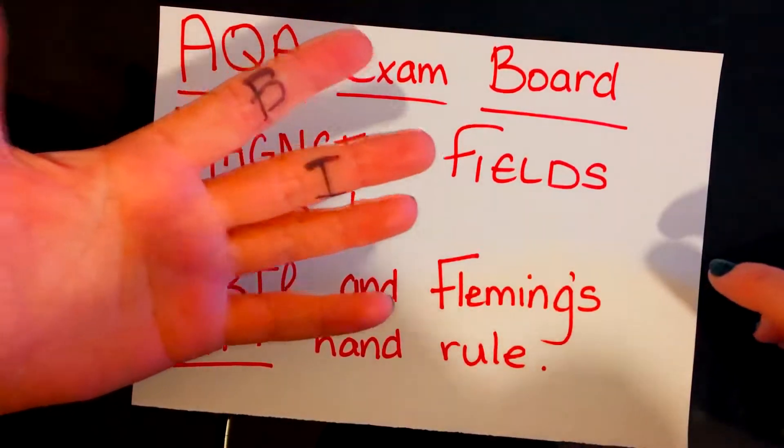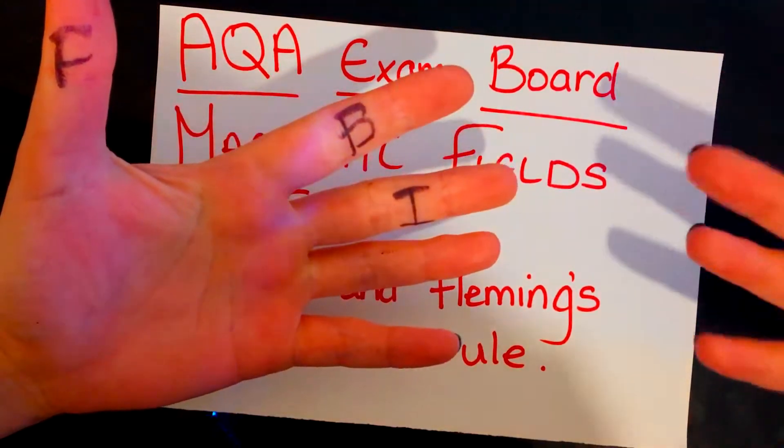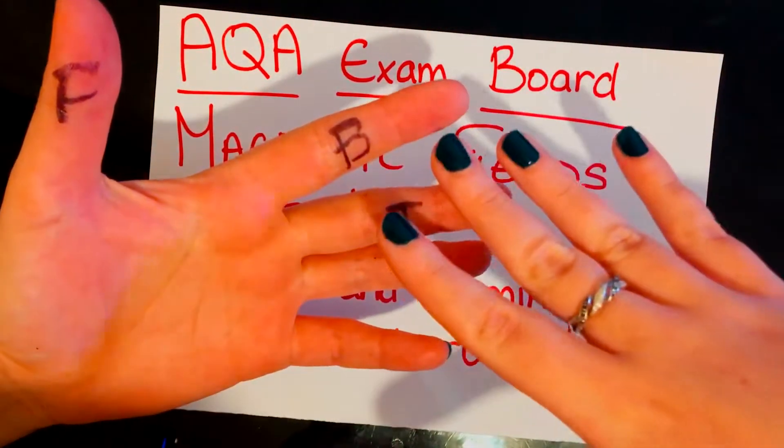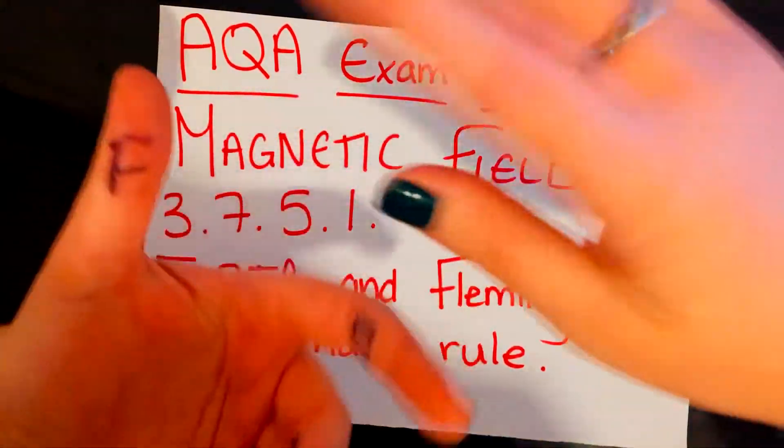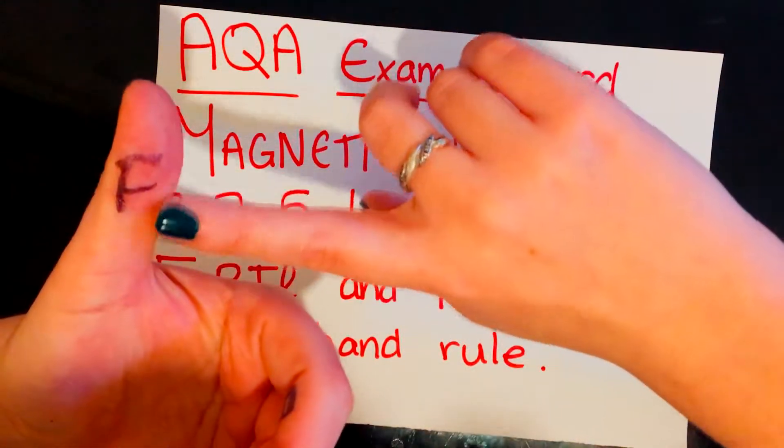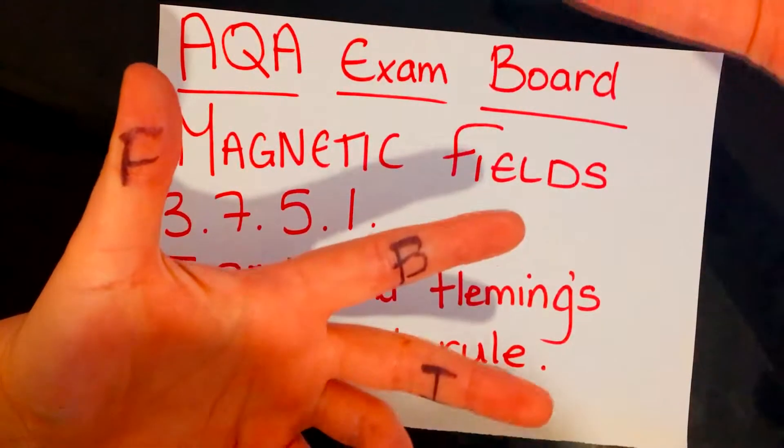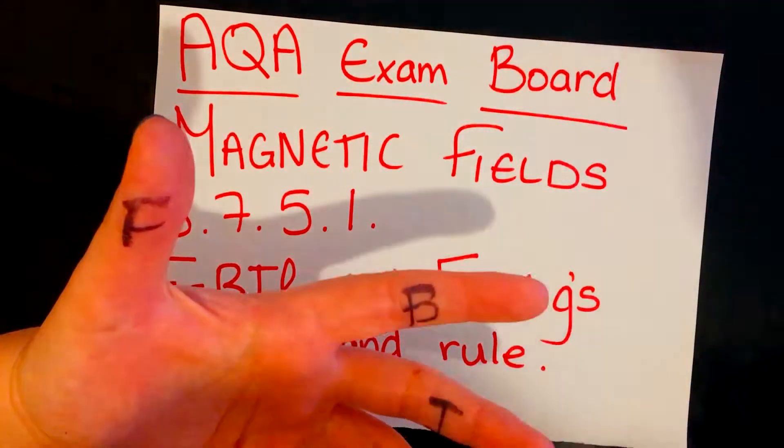Any keen-eyed people might have already spotted I've scribbled all over my hands here, and that's to help us identify which of the fingers we use to follow the rules. I remember it as thumb for movement, and that's a direction that due to a force caused by the field, a wire or a coil will try and act.